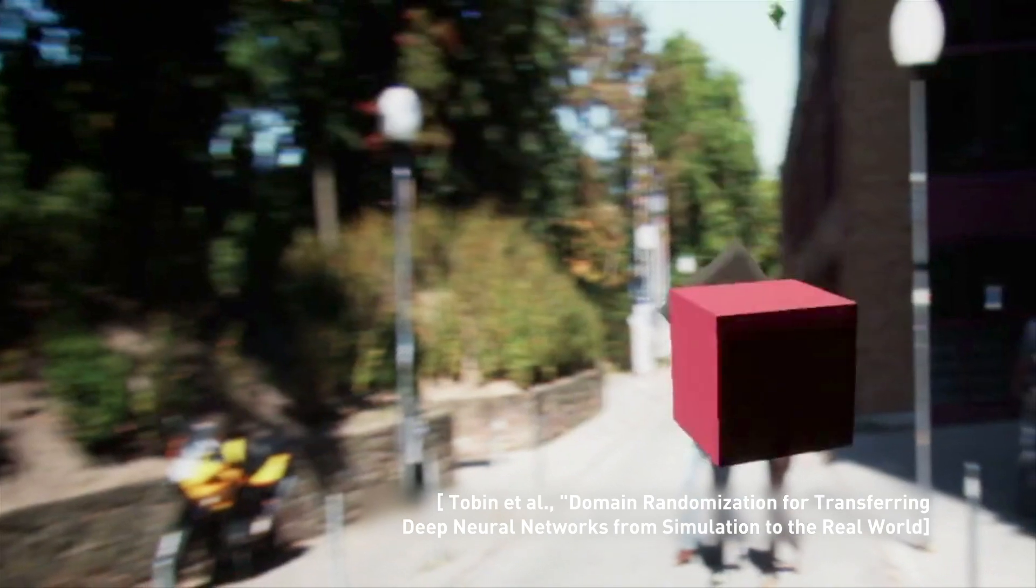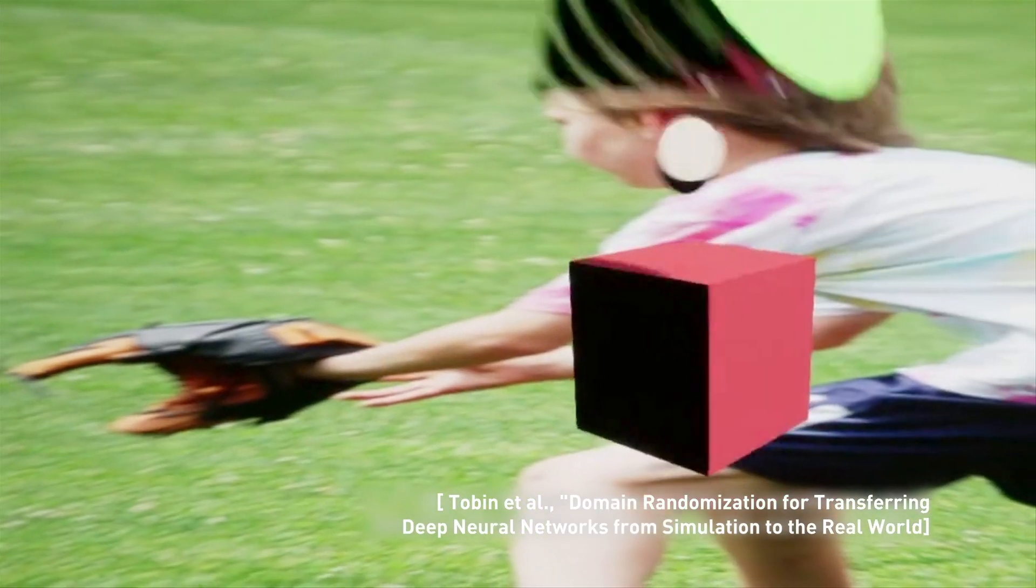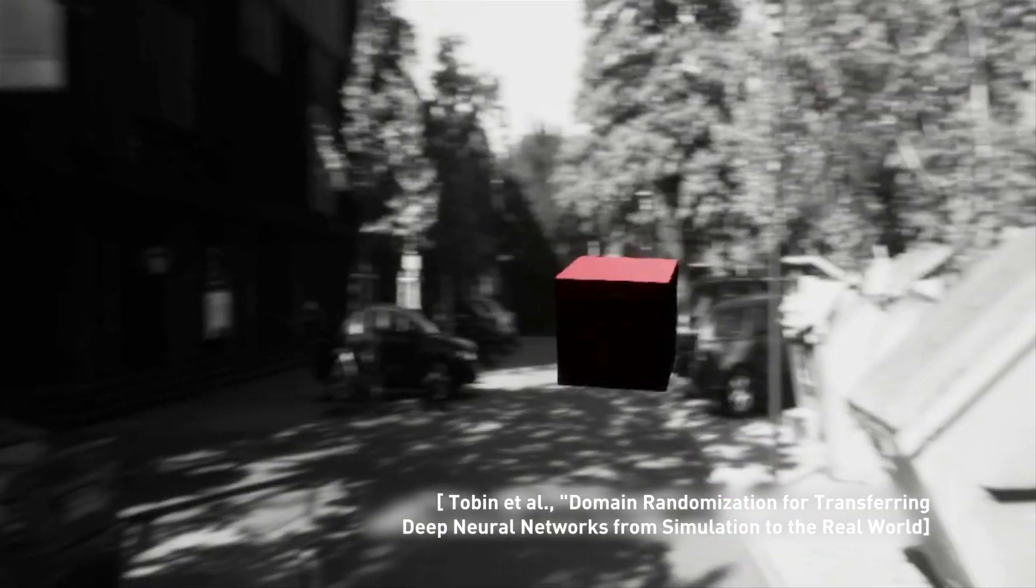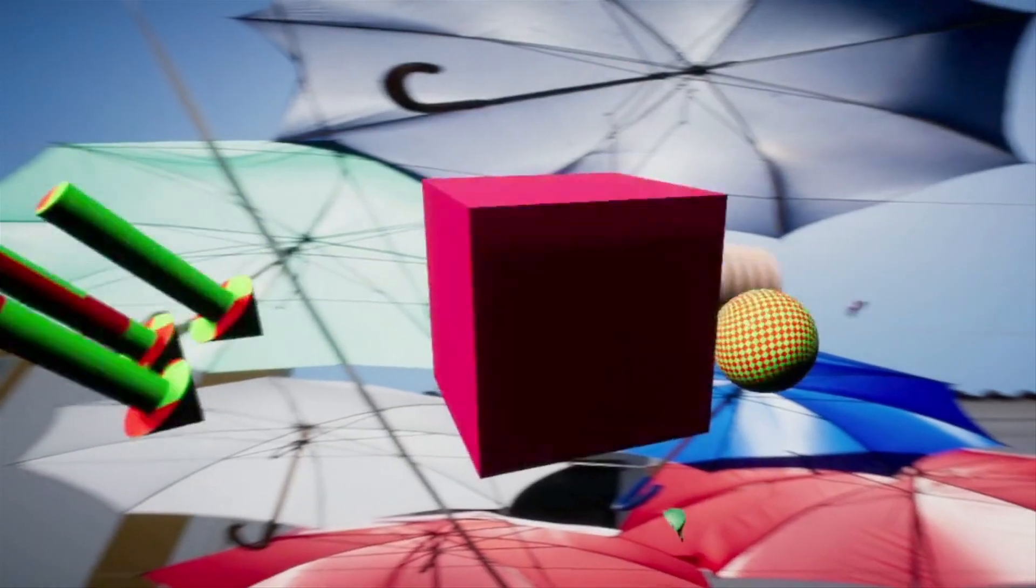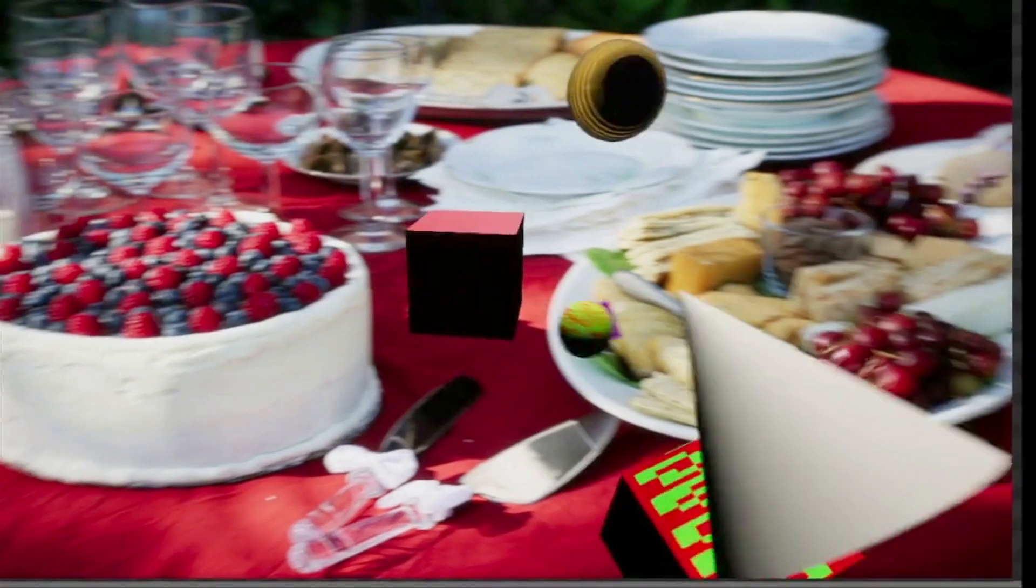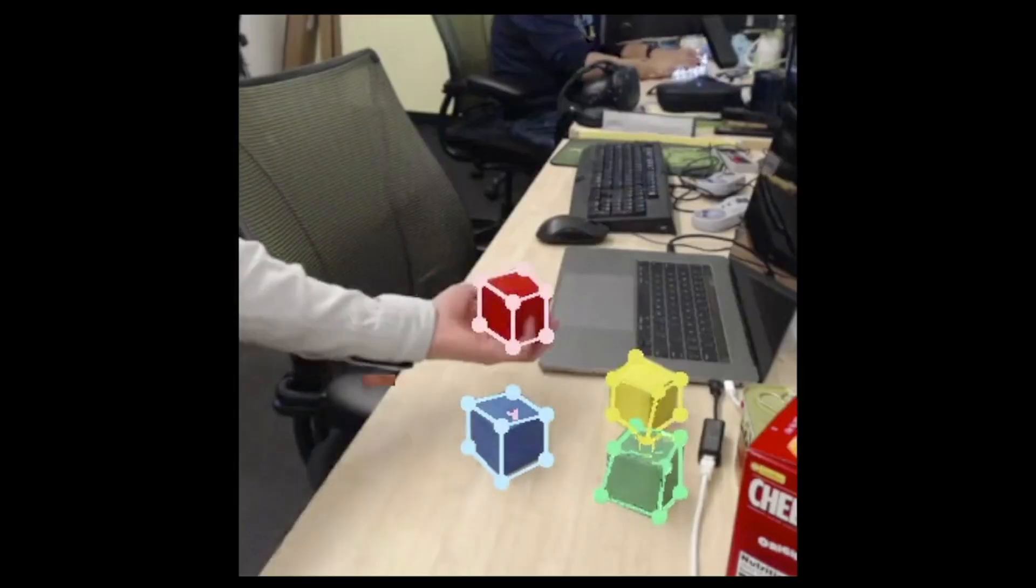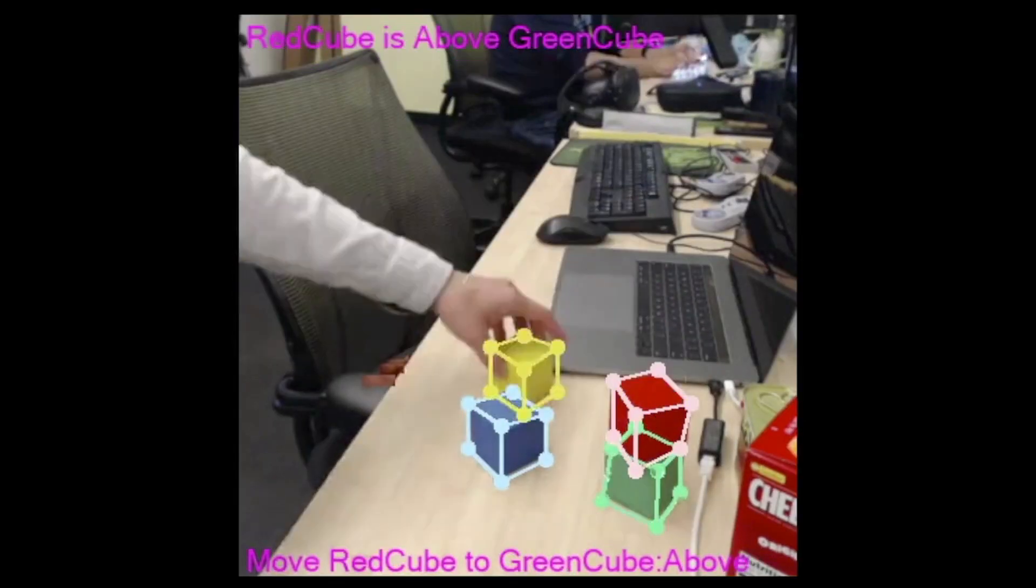Perception networks are trained via domain randomization using only synthetic images. To increase applicability to new visual settings, we predict an image space rather than a fixed world space.